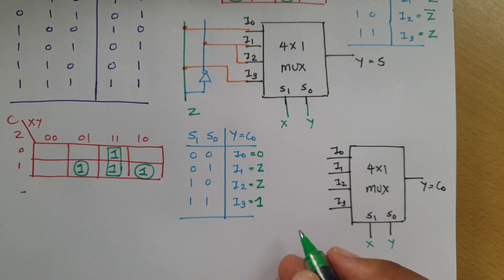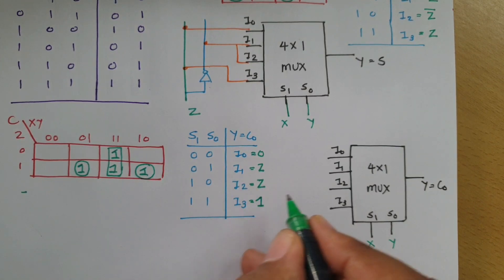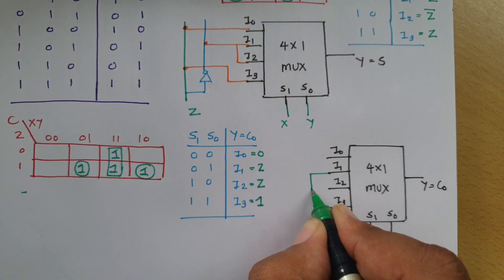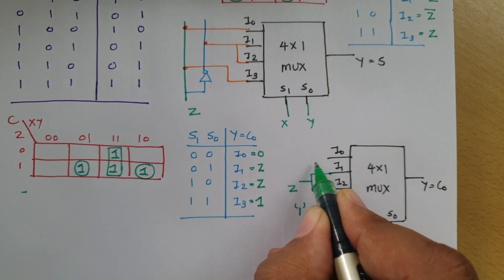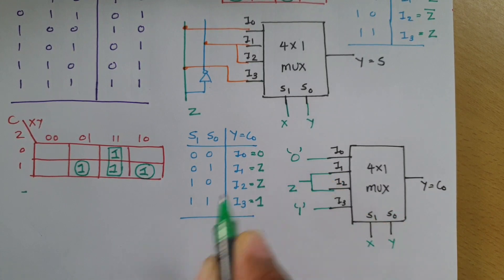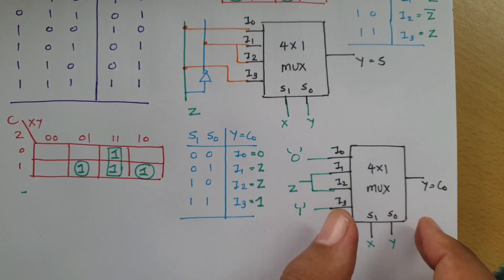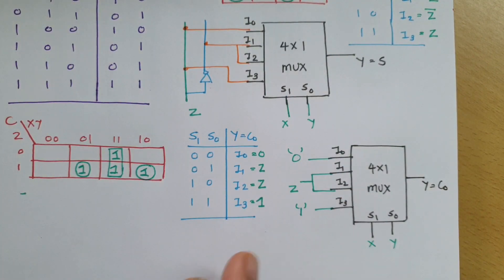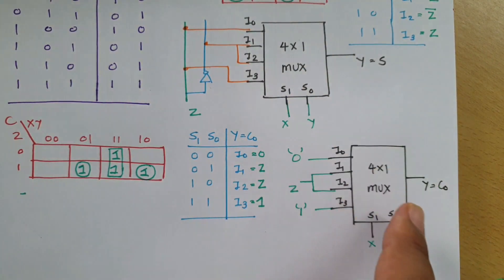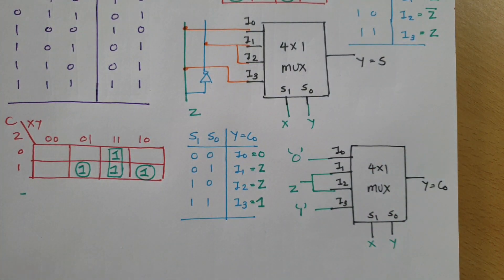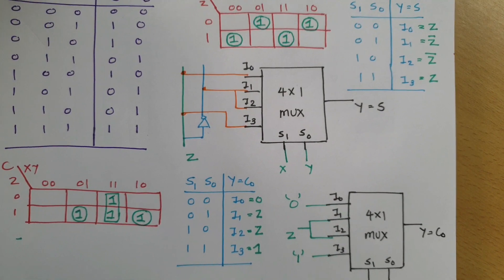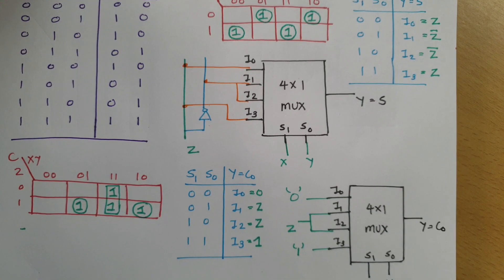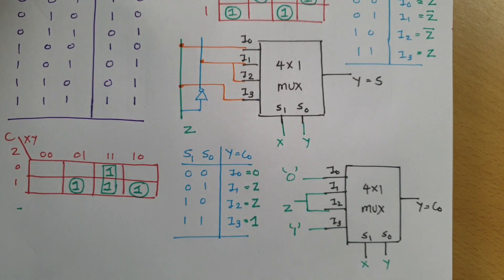Now we connect the circuit: I1 and I2 connect to z, I3 connects to 1, and I0 connects to 0. This gives us the resultant carry. So by using two 4x1 multiplexers, we have implemented the full adder — both sum and carry. I hope you have understood this. Thank you so much for watching. Please do give your valuable suggestions, as they motivate me to make better videos in the future.